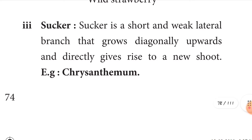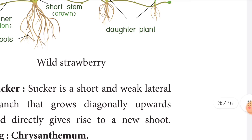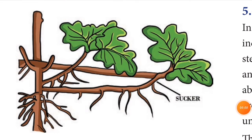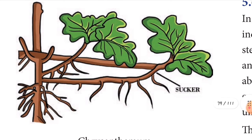The third sub-aerial type is the sucker. Sucker means a short and weak lateral branch that grows diagonally upwards and directly gives rise to new shoots. Example: chrysanthemum.